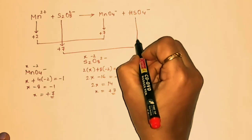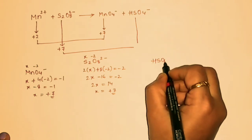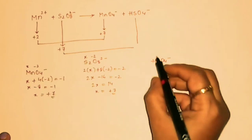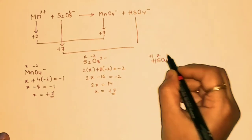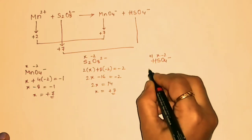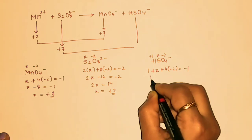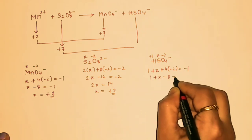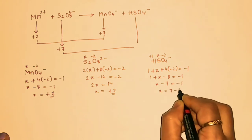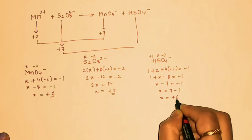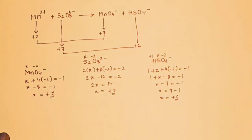Now let us find the oxidation number of sulfur in HSO₄⁻. Hydrogen is +1, sulfur is x, and oxygen is −2. So: 1 + x + 4×(−2) = −1, giving 1 + x − 8 = −1, then x − 7 = −1, therefore x = +6. The oxidation number of sulfur in HSO₄⁻ is +6.